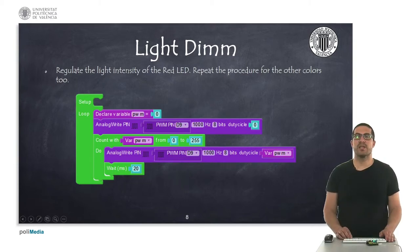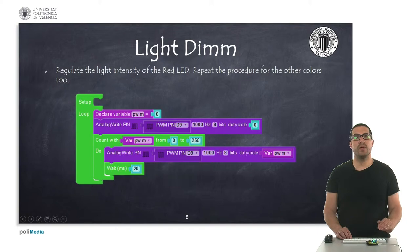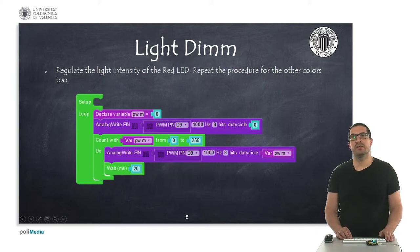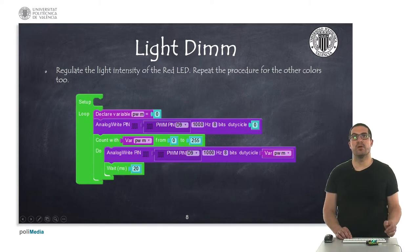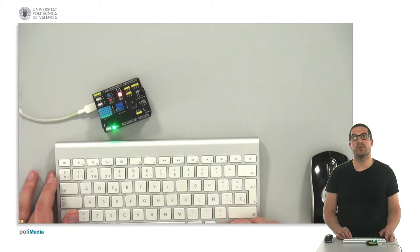In this third example, what we're going to show you is how we regulate the light intensity of the red, but we are going to do the same thing for the green and the blue color. Let's switch to the overhead camera to see how it works.